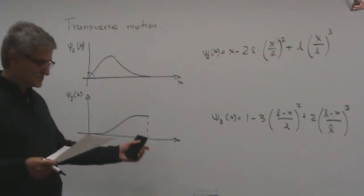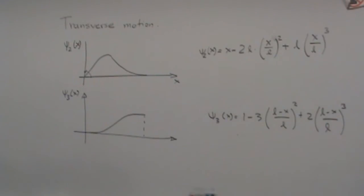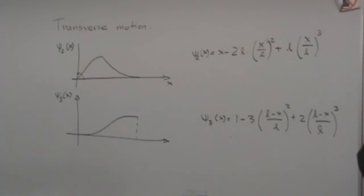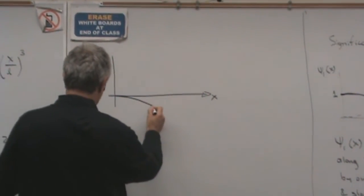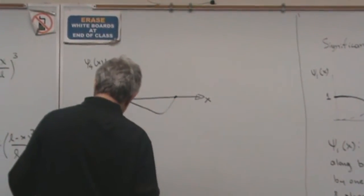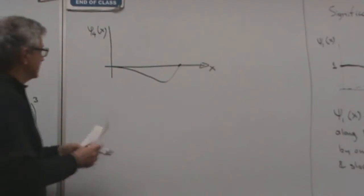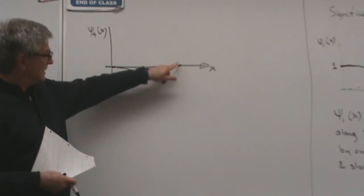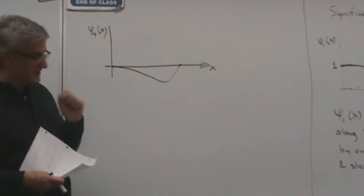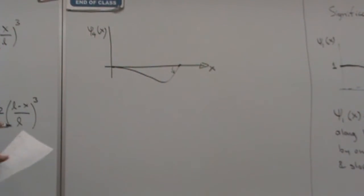The fourth mode shape is obtained when you rotate the right end by one unit while everything else is zero: zero displacement, zero slope at the left end, zero displacement at the right end, but unit rotation at the right end. Remember that positive rotation is in the counterclockwise direction.